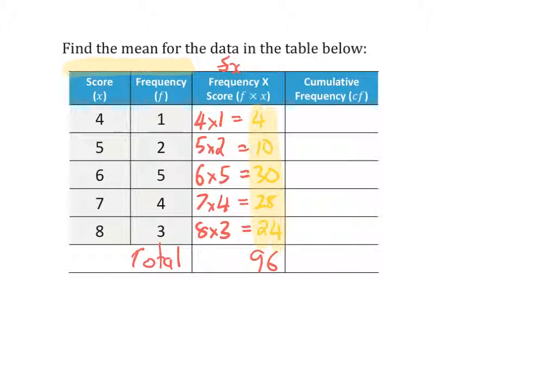Once I've completed the frequency times the score column, I need to go ahead and complete the last column, which is the cumulative frequency. In this column, I'm adding up the frequency at the end of each number. So the first one, I'm starting at 0 and the frequency was 1. So 0 plus 1 equals 1.